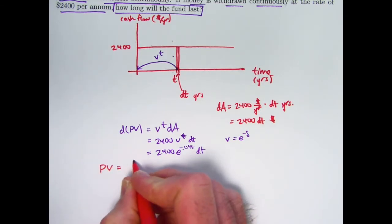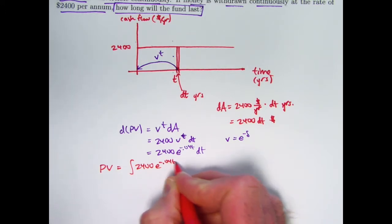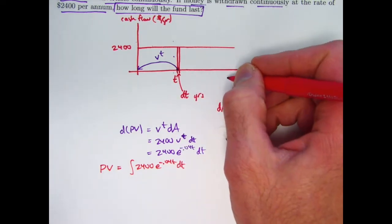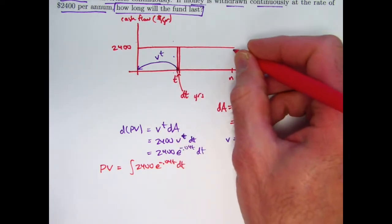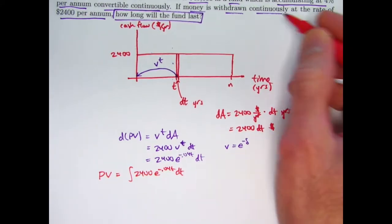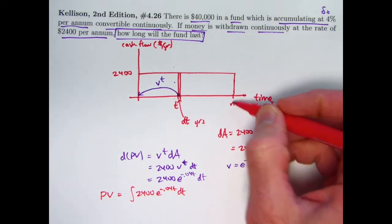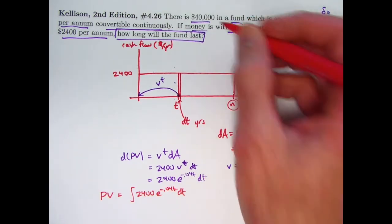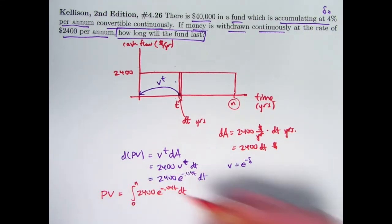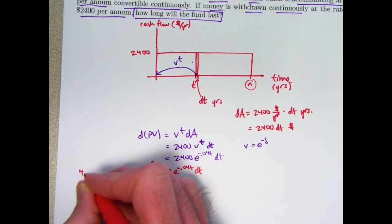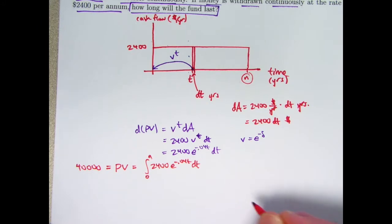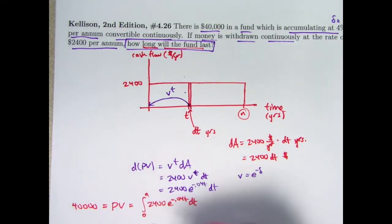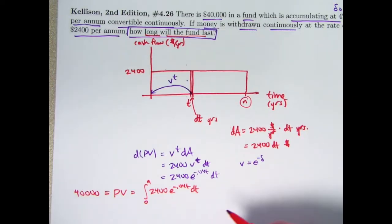The overall present value would be the integral of 2400 e to the negative 0.04 t dt, evaluated from 0 to that time. But ultimately, I'm going to want to find the present value up to some unspecified time n. Because I'm wondering, I want to solve this problem, I'm wondering when the money's going to run out, I'm going to wonder what time n will make the present value of this entire income stream equal to the 40,000 that is in the account to begin with. So I'm going to integrate from 0 to some unspecified time n. I want this to equal $40,000. And I want to solve for the value of n that makes that true. And that will answer the question, how long will the fund last when the 40,000, the value in the account of time 0 is the same as the present value of the entire income stream as you withdraw it.